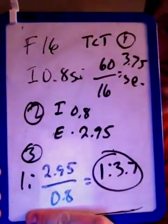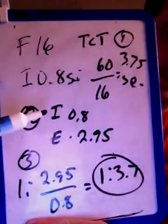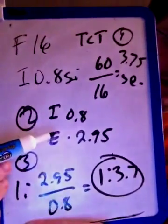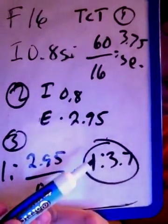One more example: rate of 16, I-time of 0.8 seconds. Step one — total cycle time: 60 divided by 16 equals 3.75 seconds. Step two — I-time is 0.8, so E-time is 2.95 seconds, since 0.8 plus 2.95 equals 3.75. Step three — 2.95 divided by 0.8 gives an I:E ratio of 1 to 3.7. Feel free to stop the video if you need to review these steps.